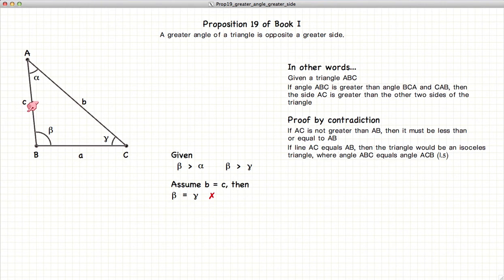Well, if B and C are equal, then beta and gamma must be equal, since they would be the angles of an isosceles triangle. Since we have already stated that beta is greater than gamma, beta equals gamma cannot be true. Hence, B cannot equal C.